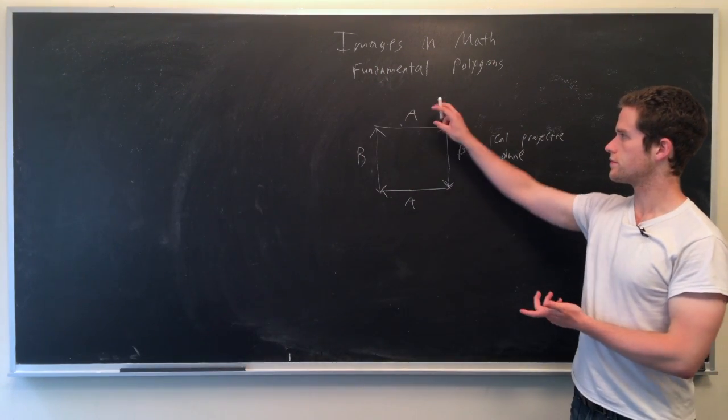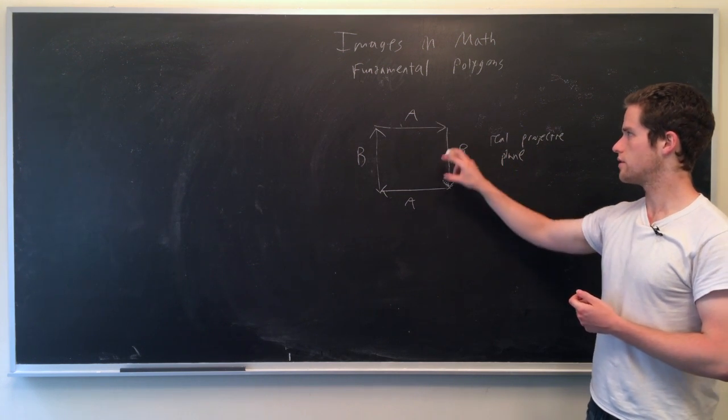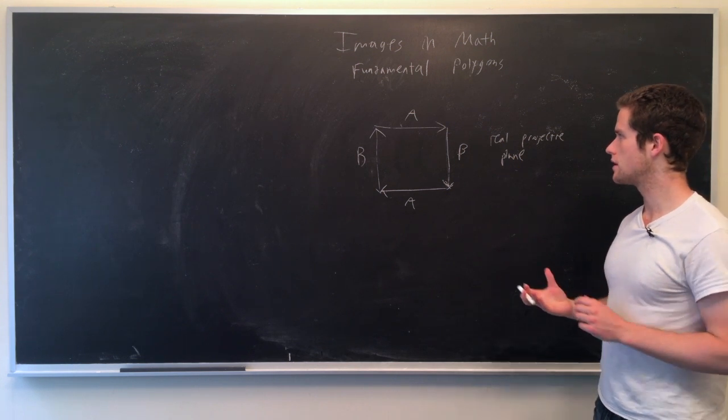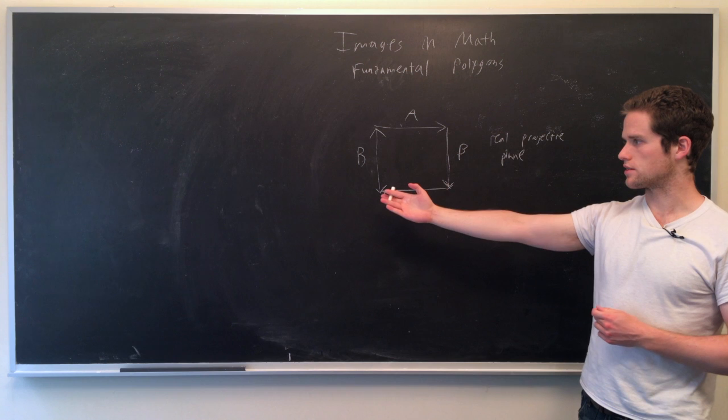So here, now, again, the A sides go together, the B sides go together, here both sides are kind of twisted together. So this figure here will go with the real projective plane, which we can see a figure here.